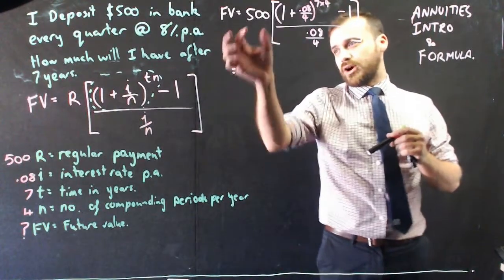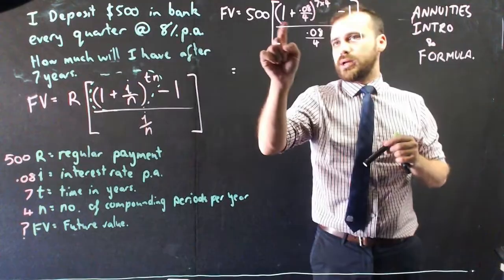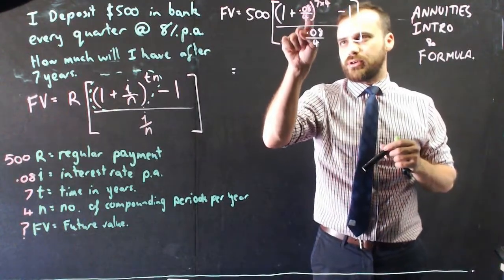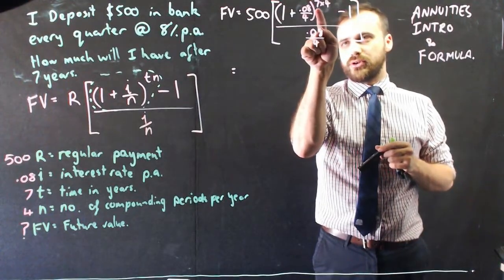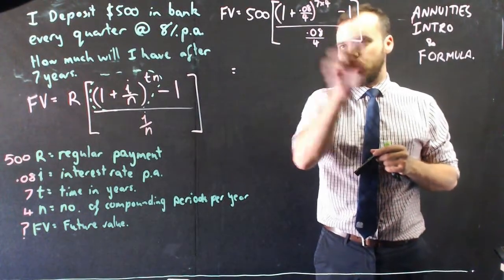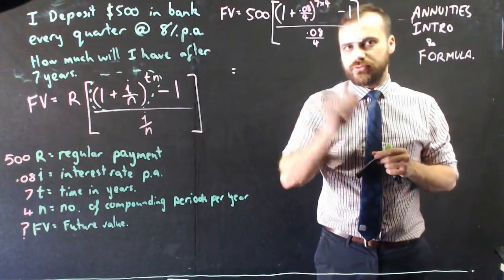All right, so here it is. $500 is my repayment, 1 plus the interest rate, 0.08 over 4, in brackets, to the power of 7 times 4 minus 1 over 0.08 over 4.